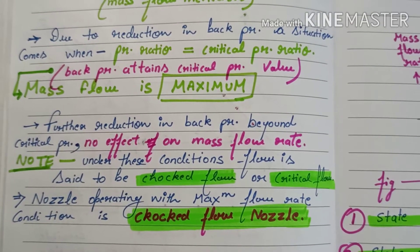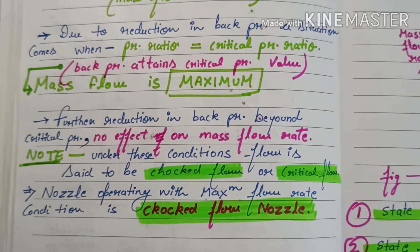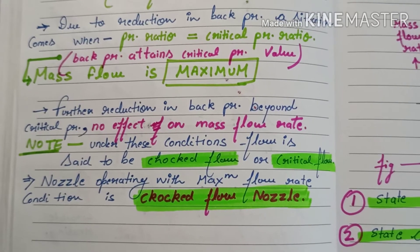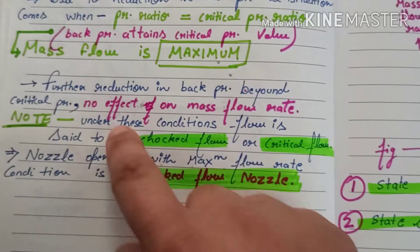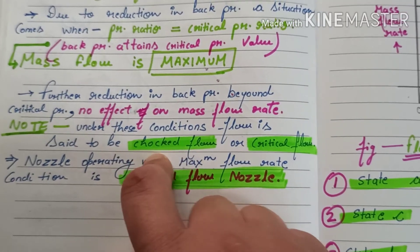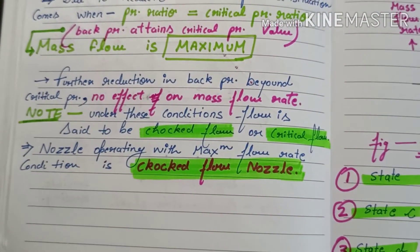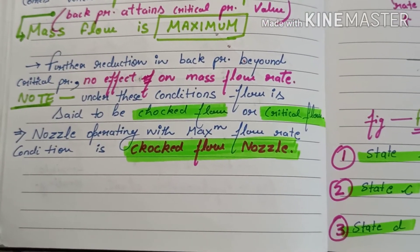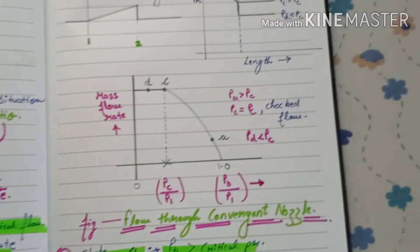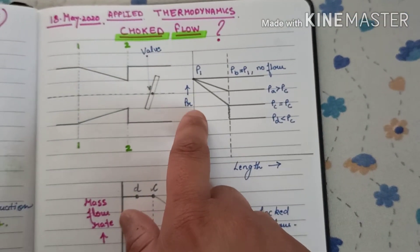Such a condition is called choked flow or critical flow. Under these conditions the flow is said to be choked flow, and the nozzle operating at the maximum flow rate condition is called a choked flow nozzle.